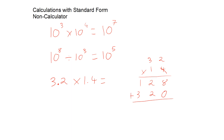We add up the answers to get 448. But that isn't the answer to 3.2 times 1.4, because we'd need to move the decimal point back two places, since there were two decimal places in the question. So the answer would be 4.48.